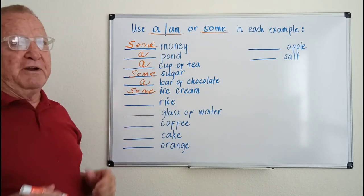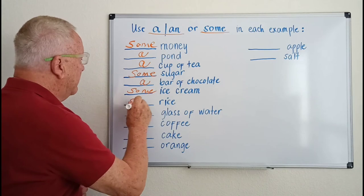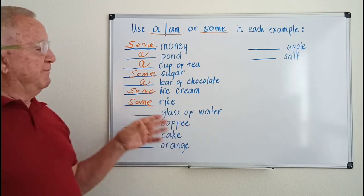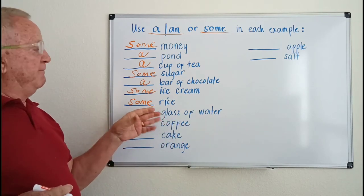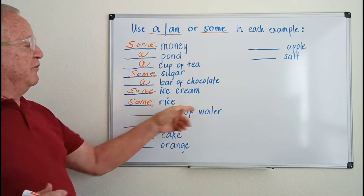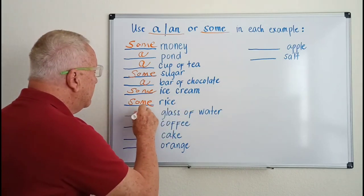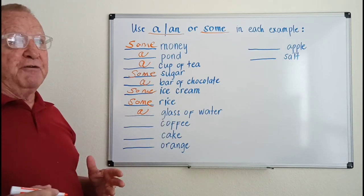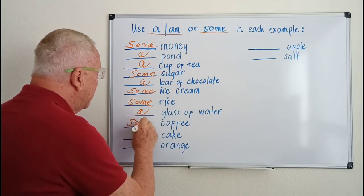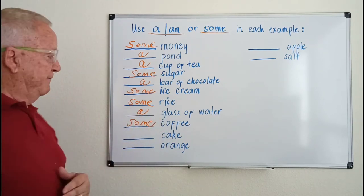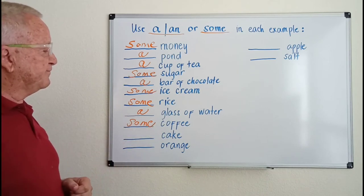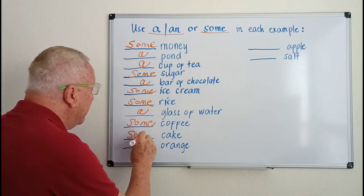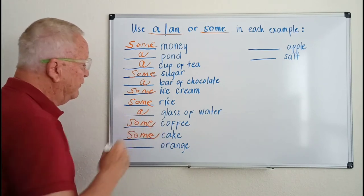Rice — we don't count it by itself, so 'some rice.' Glass of water — countable using 'of': 'a glass of water.' Coffee — uncountable: 'some coffee.' Cake — uncountable: 'some cake.' Would you like some cake? Would you like some coffee?